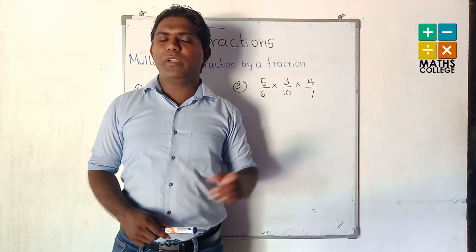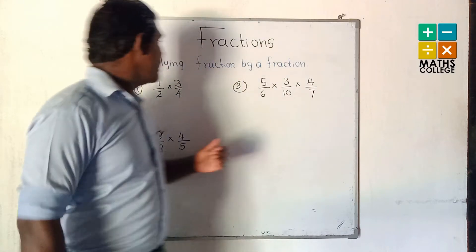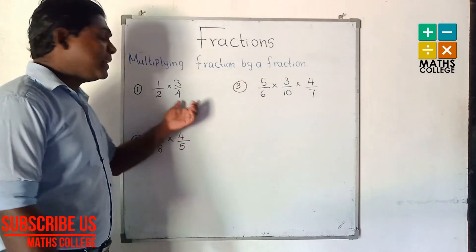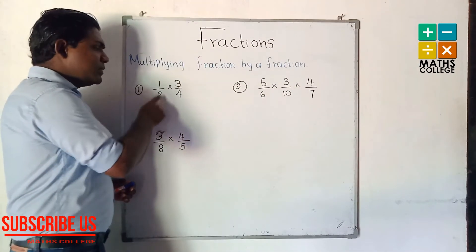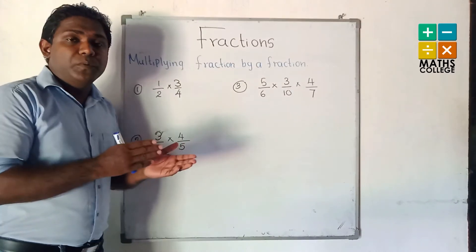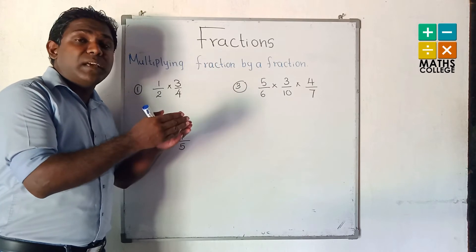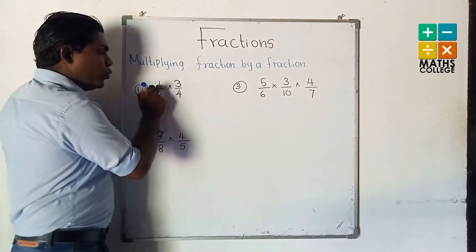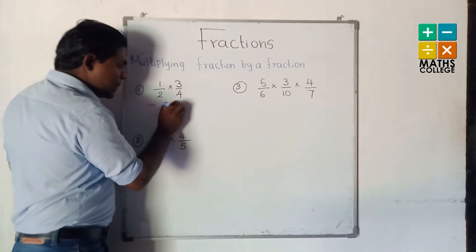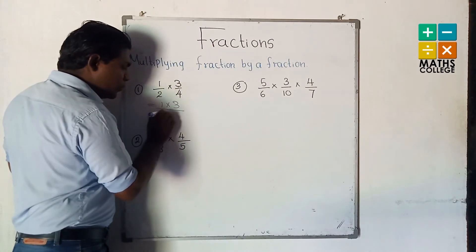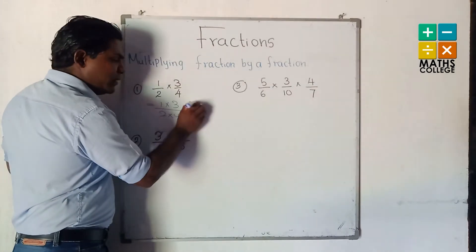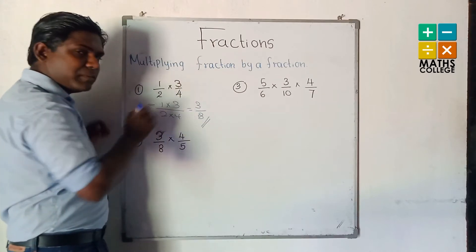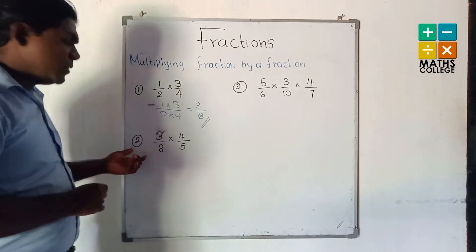Now we are going to the third step: multiplying a fraction by a fraction. Now you have two fractions. First example: 1/2 multiplied by 3/4. Multiply the numerators together and the denominators together. 1 multiplied by 3 is 3, and 2 multiplied by 4 is 8. The answer is 3 upon 8.